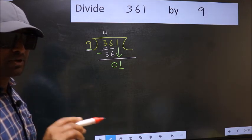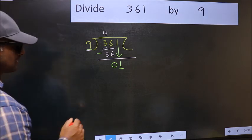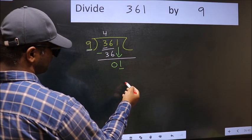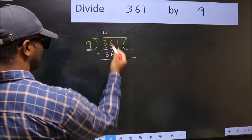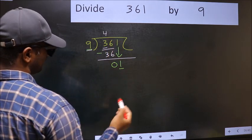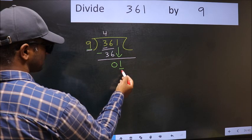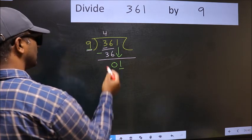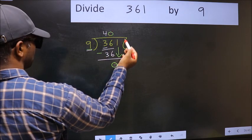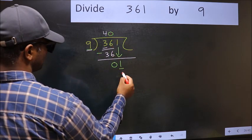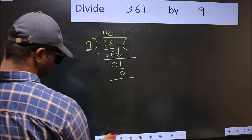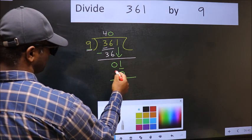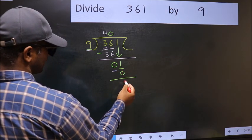Instead, what you should think of doing is, which number should we take here. If I take 1, we will get 9, but 9 is larger than 1. So what we should do is, we should take 0. So 9 into 0, 0. Now you should subtract. 1 minus 0, 1.